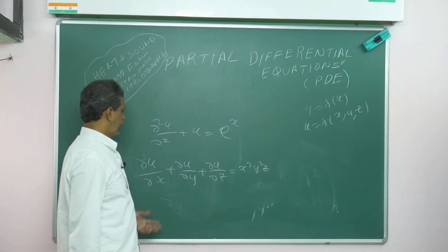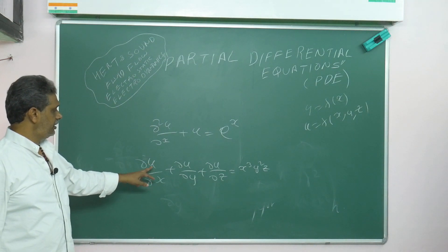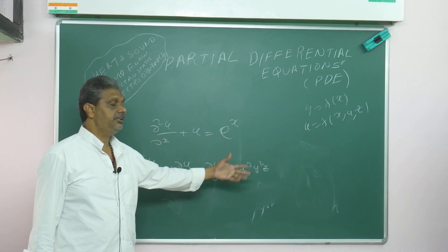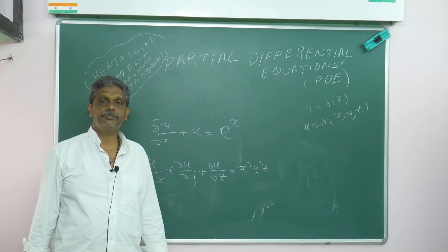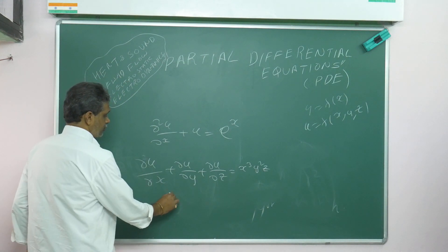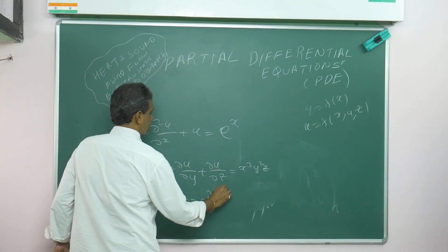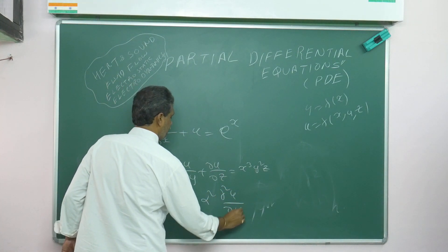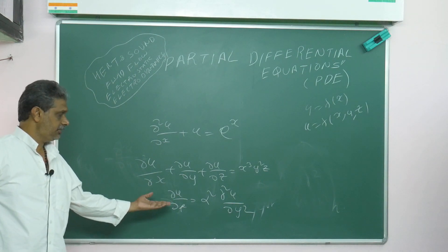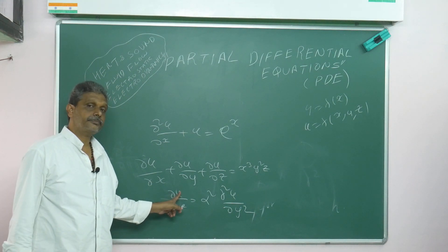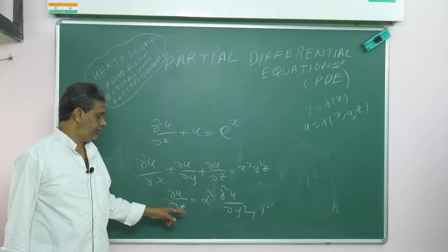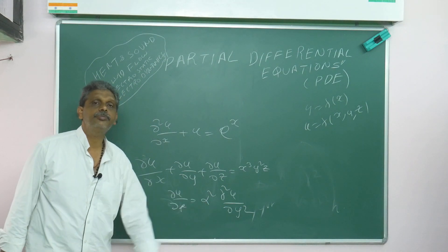Here, u is the dependent variable and x, y, z are independent. You may also get ∂u/∂t equals α² times ∂²u/∂x². In this equation, u is the dependent variable and t and x are the independent variables.